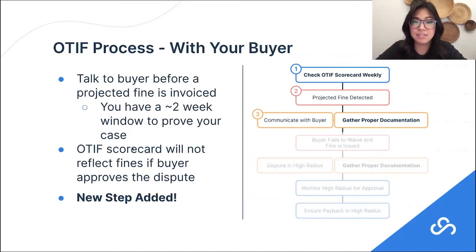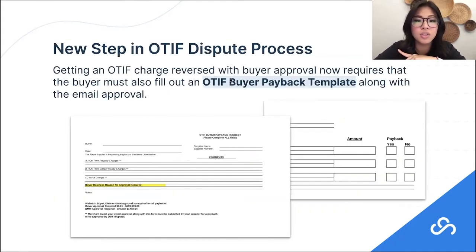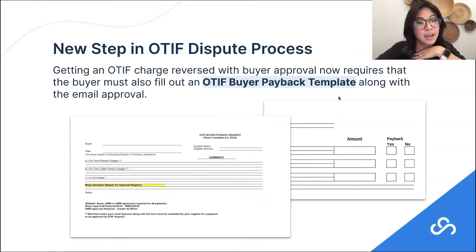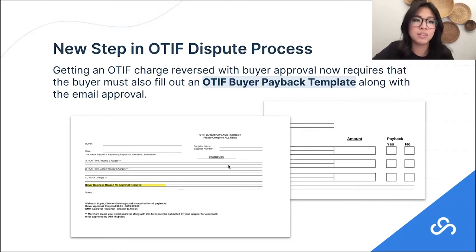Walmart just recently — literally two days ago — introduced a whole new step to disputing OTIF fines with your buyer. You now have to ask your buyer to fill out something called the OTIF buyer payback template. Before, Walmart buyers could just email their bosses and say yes, waive these OTIF fines. Now they actually have to fill out this payback template if you want them to waive any of your OTIF fines. We will share this template in our follow-up emails.